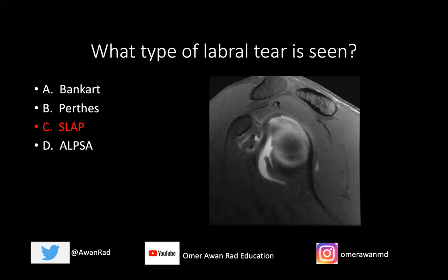This is a SLAP tear — a superior labral anterior to posterior tear. Looking at the sagittal image, we can identify the supraspinatus muscle, infraspinatus, teres minor, and subscapularis. The subscapularis is anterior, and this is posterior. This circle is the glenoid process of the scapula, and the black circle around the glenoid is the labrum — a static stabilizer of the shoulder that is dark and hypointense on all MRI sequences.